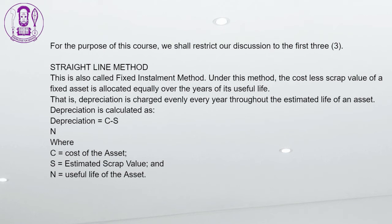The straight line method, also called the fixed installment method, allocates the cost less scrap value of a fixed asset equally over the years of its useful life — depreciation is charged evenly every year throughout the estimated life of an asset. Depreciation is calculated as: Depreciation = (C − S) / N, where C equals cost of the asset, S equals estimated scrap value, and N equals useful life of the asset.